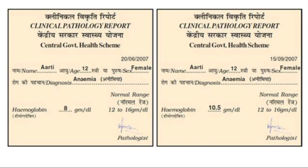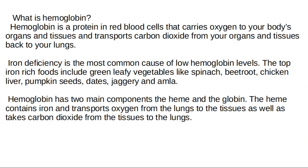Then automatically hemoglobin went up. Compare these two: before she had 8 points, and after taking proper diet and medicine, the hemoglobin went up to 10.5. Now we will discuss about hemoglobin. Hemoglobin is a protein in red blood cells that carries oxygen to your body's organs and tissues and transports carbon dioxide from your organs and tissues back to your lungs. There are three types of blood cells: red blood cells, white blood cells, and platelets. Hemoglobin is a protein present in red blood cells.